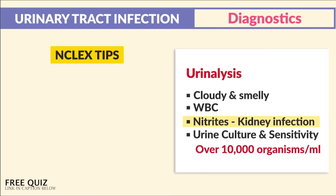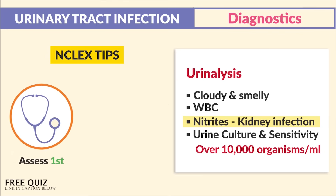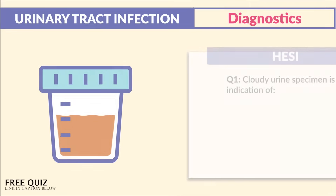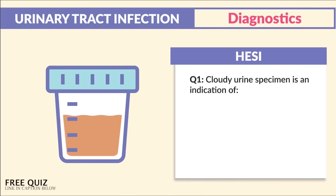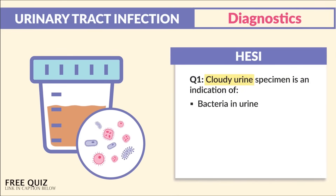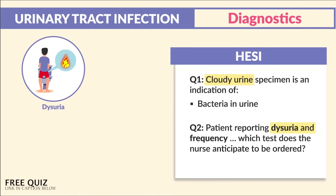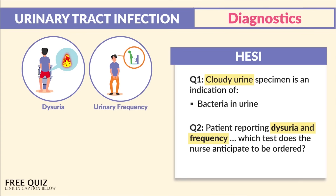Big NCLEX tip: cultures are always taken first, and then we give antibiotics after. Remember on the NCLEX, we assess first and then do interventions second. Hesse mentions a question about a cloudy urine specimen as indication of bacteria in the urine, with a patient reporting dysuria and frequency — which test does the nurse anticipate?